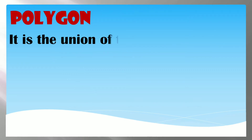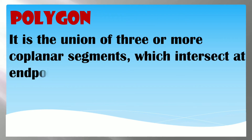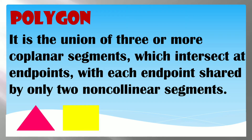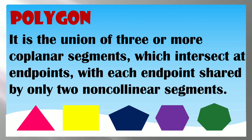A polygon is the union of three or more coplanar segments which intersect at endpoints, with each endpoint shared by only two non-collinear segments. Examples of polygons are Triangle, Square or Quadrilateral, Pentagon, Hexagon, and Heptagon. There are many different types of polygons depending on the number of sides.